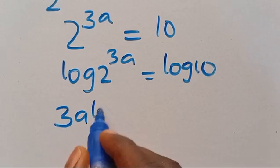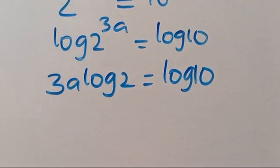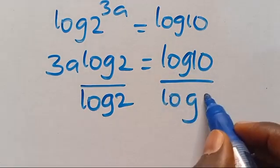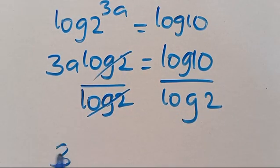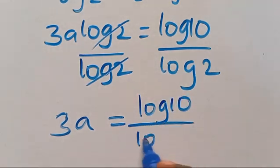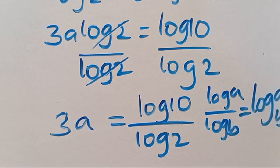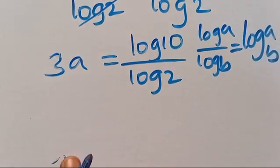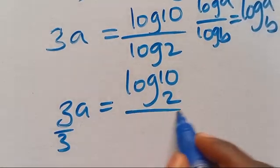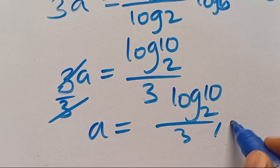From here, applying the power rule: 3a multiplied by log 2 equals log 10. Dividing both sides by log 2, we get 3a equals log 10 divided by log 2. Recall that log a divided by log b equals log of a in base b. So 3a equals log 10 in base 2. Dividing by 3, we get a equals log₂10 divided by 3. That is the answer using Method 2.